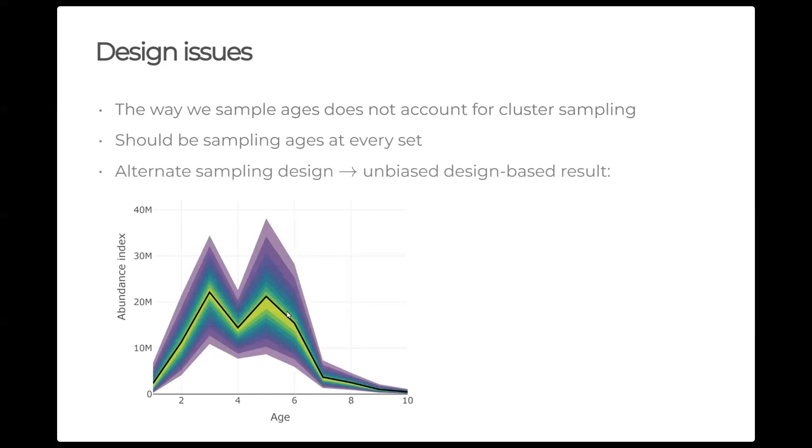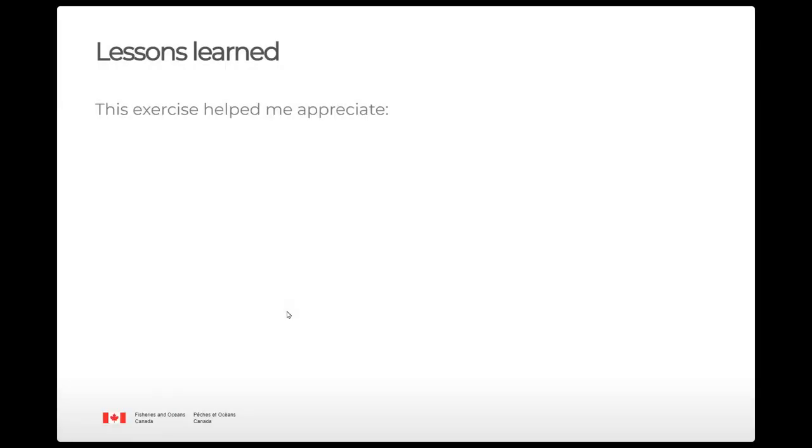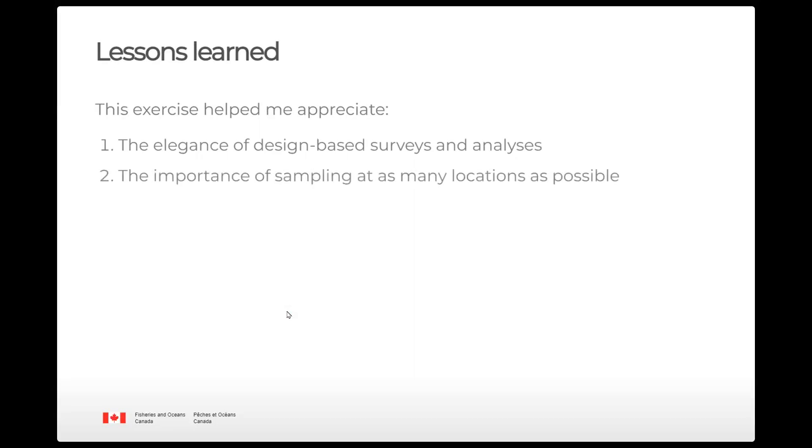But then I got to the age based results and much to my confusion, they were biased. And I had no idea why we were getting biased results and the estimates coming from stratified estimator were overestimating or underestimating the true population size sometimes. And that is until I read this paper, which promoted the application of statistical estimators that collect otoliths at each and every set. And so applying their alternate sampling design and their proposed alternate design based analysis, we get in simulation world a non-bias design based result.